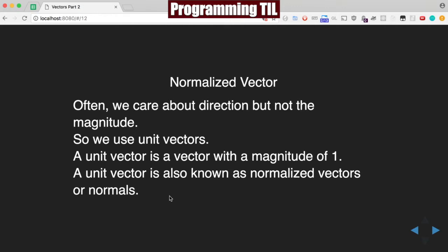Normalized vectors: a lot of times we care about the direction but not necessarily the magnitude. So we use a unit vector, which has a magnitude of 1. This is also known as normalized vectors or normals, so if you see compute the normal or the unit vector, those are the same thing.